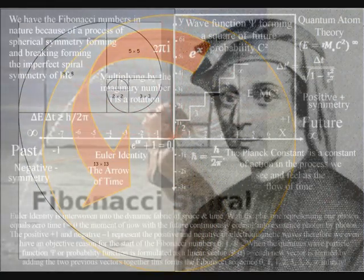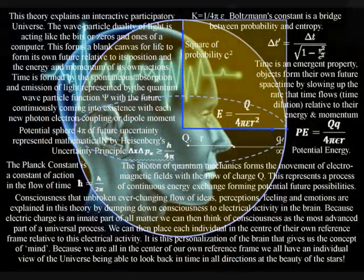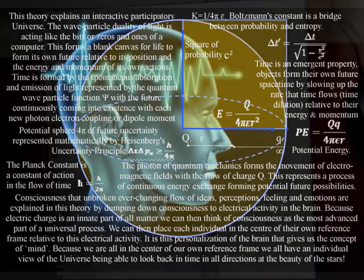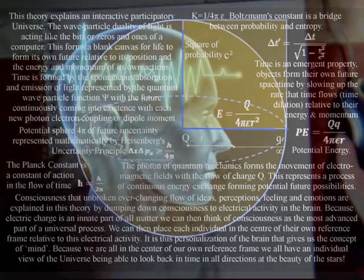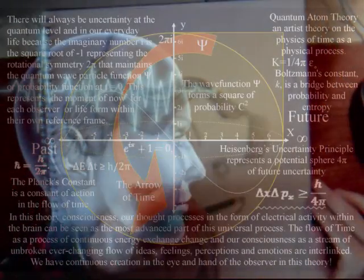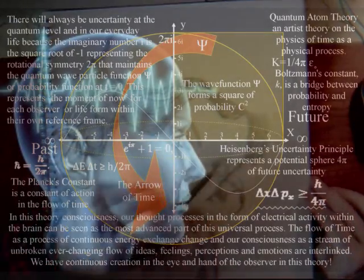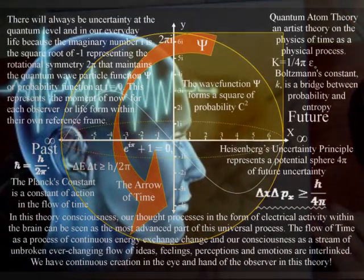This deep principle within the fabric of our universe forms the potential for knowledge of the process. This theory explains conscious awareness in the form of electrical activity within the brain as the most advanced part of this universal process — one that is aware of its own electrical potential. Therefore we can comprehend this process from the center of our own reference frame as time, with a past that has gone forever and an uncertain future that only exists as a probability wave function.